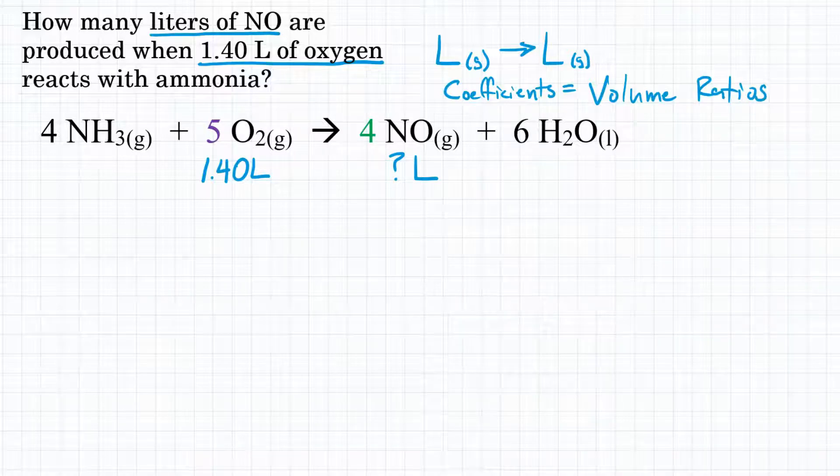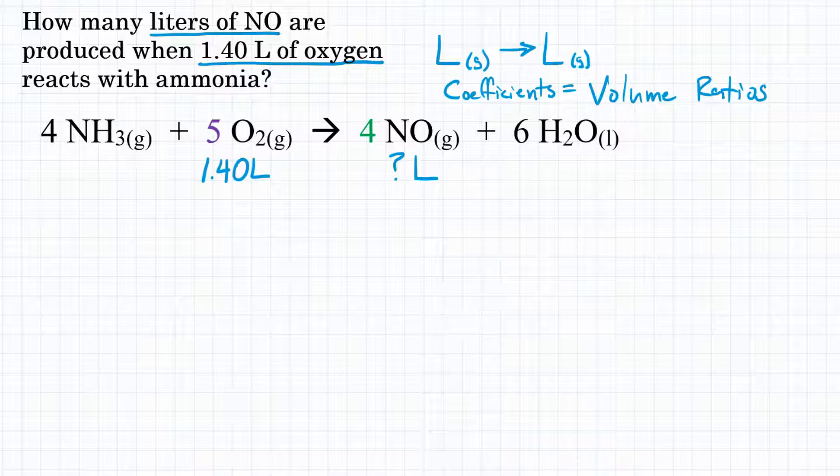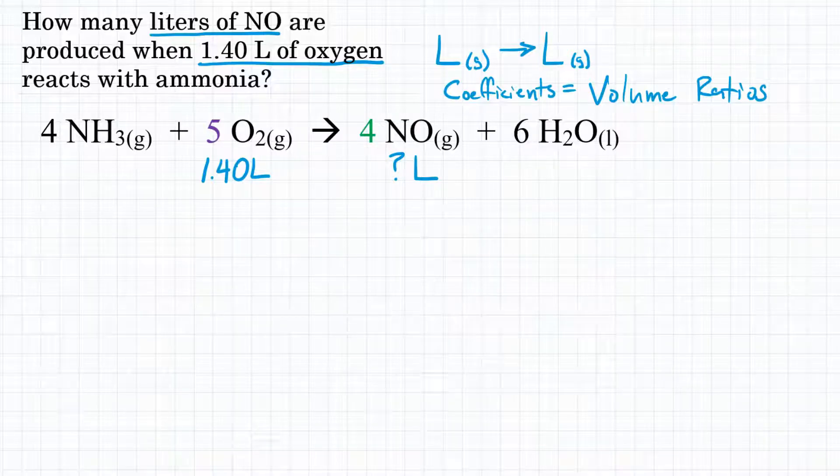That means we can go directly from volume of any reactant or product to volume of any other reactant or product. It's just one step because our coefficients go straight from volume to volume—they are our volume ratios.